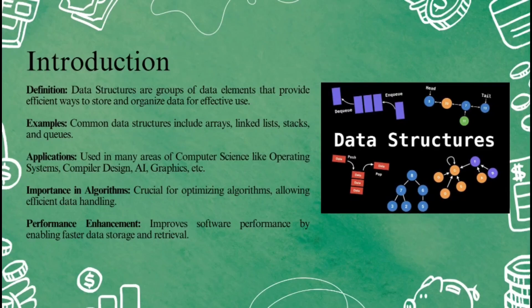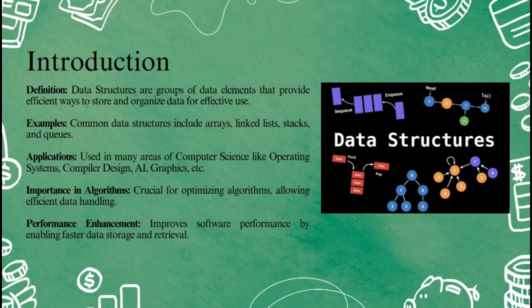Why do data structures matter in algorithms? Algorithms are like recipes that tell the computer how to do something step by step. Choosing the right data structure helps these algorithms run faster and more efficiently. For example, if you need to sort a list of names, the right data structure can help you do it in less time. Better performance: when you use the right data structure, your programs run faster — they can store, find, and change data more quickly. For example, if you need to search through thousands of files, the right structure can save you a lot of time.